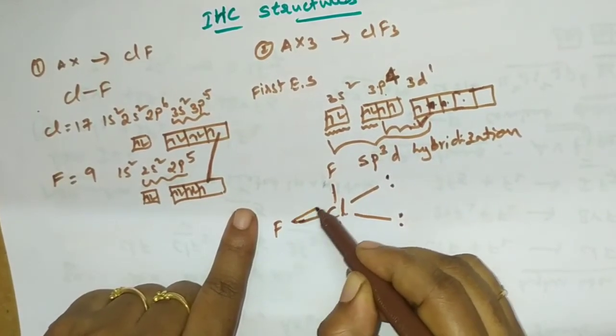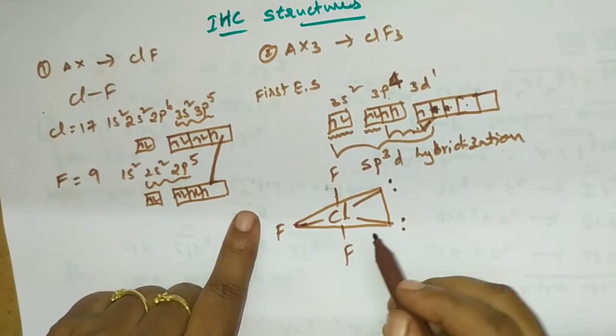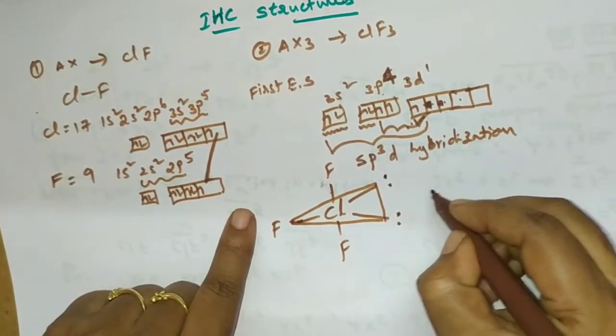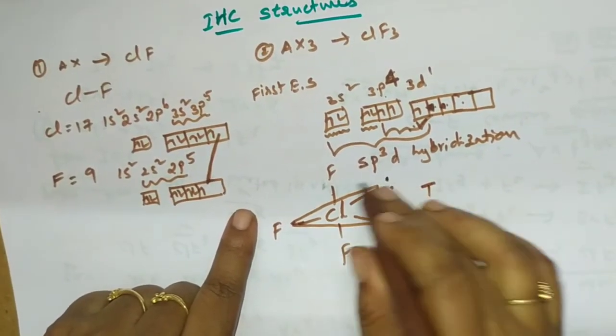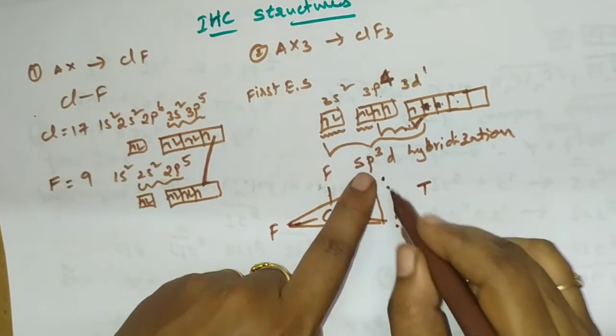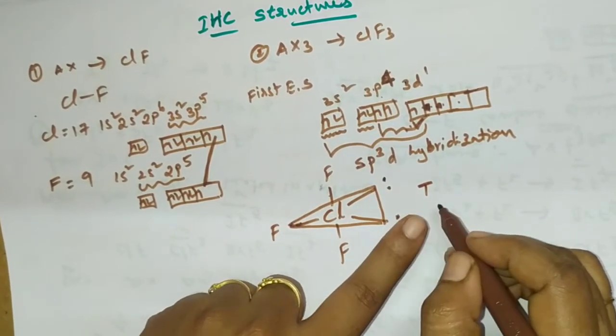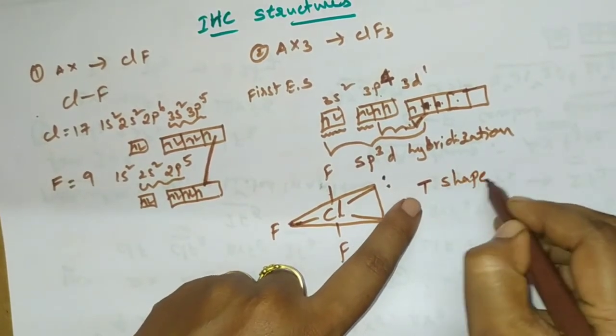This one will be the structure. So here it will be having the T-shape, T-shape. Even in case 5 bonds are formed, then shape is different. But here with the two lone pair of electrons, it will be T-shape.